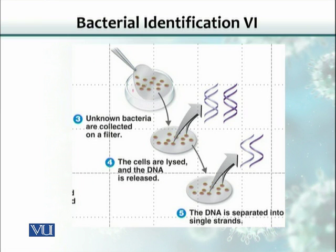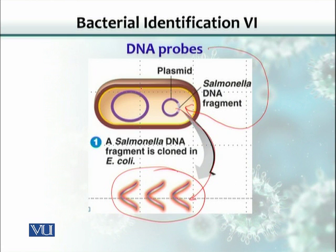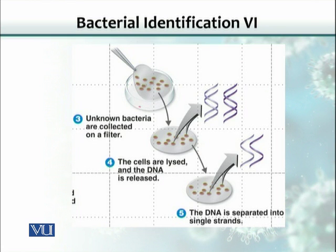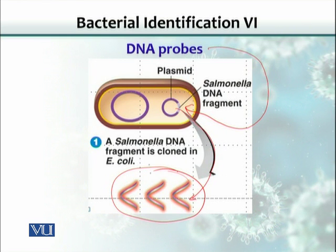Let's say this is a plate that contains hundreds of different colonies isolated from the sample. This could be a mixture of microorganisms, different species, or a sample containing different contaminants along with the causative agent of a disease. What we can do is detect specific DNA — the presence of this DNA in these colonies. This DNA is specific to Salmonella only.